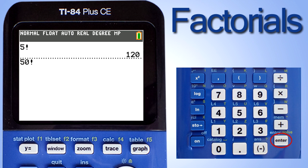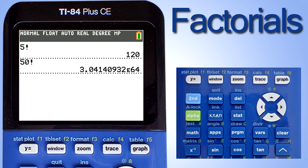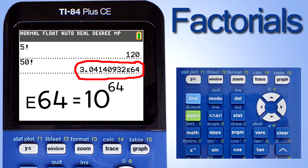Now we are showing 50 factorial. To calculate 50 factorial, press the enter key. The answer is 3.0414932 to E64. That E64 means 10 to the 64th power.